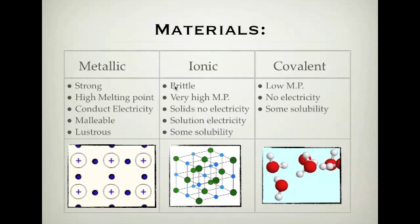Ionic compounds are brittle, they have a very high melting point indeed. As a solid they do not conduct electricity. As a solution — so when they're dissolved — they do conduct electricity, and they show some solubility. So some ionic compounds are soluble and some are not.